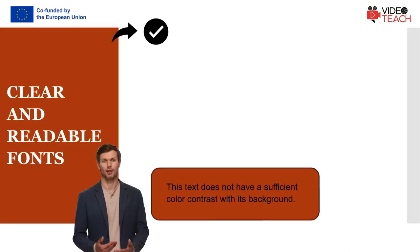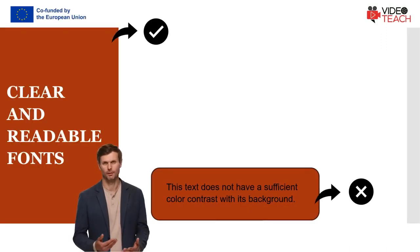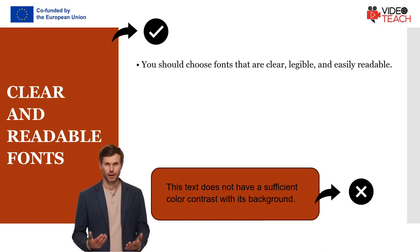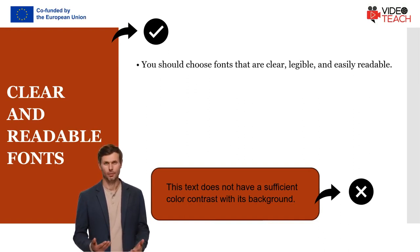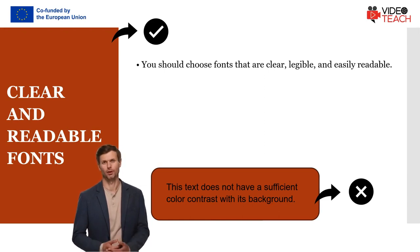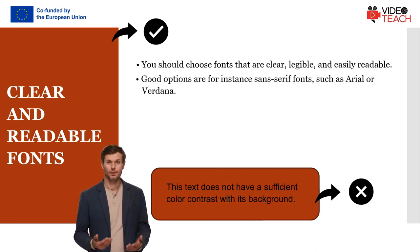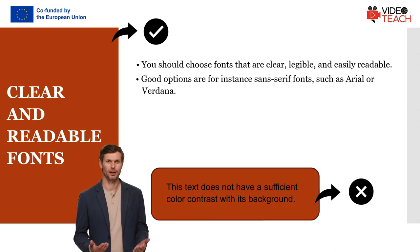Another aspect of digital accessibility is the use of fonts. You should choose fonts that are clear, legible, and easily readable. Avoid using decorative or complex fonts that may pose difficulties for individuals with visual impairments or reading disabilities. Good options are, for instance, sans-serif fonts such as Arial or Verdana, as they tend to be more accessible.